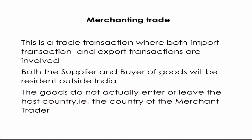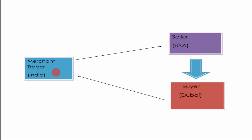The intermediary or the Merchanting trader will be in India, and the goods do not actually enter or leave the host country — that is, the country of the merchant trader. So if the merchant trader is in India and is doing a merchant trade transaction involving Dubai and USA, the goods do not come into India. The merchant trader arranges for goods to be transported from USA to Dubai, so the buyer is in Dubai, the seller is in USA, and the goods go directly from USA to Dubai.